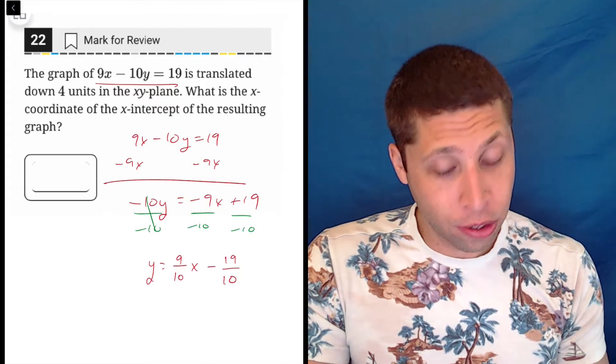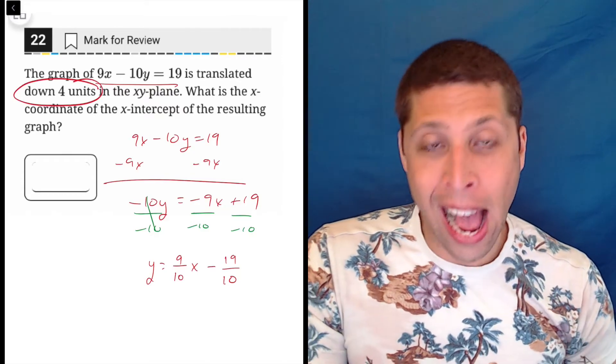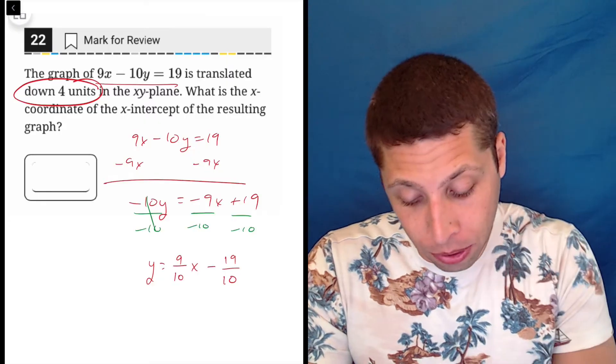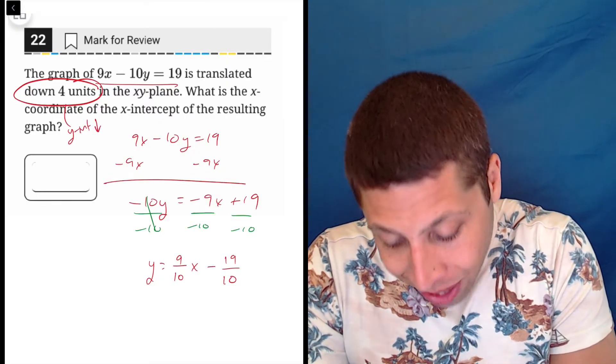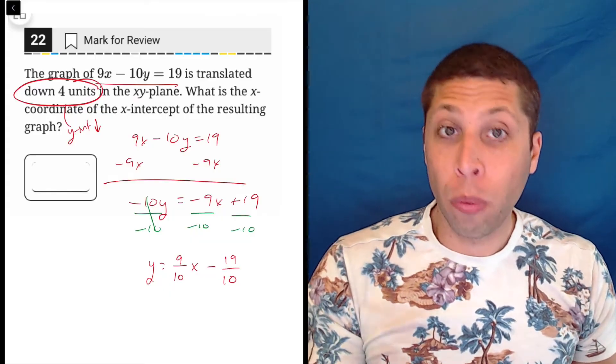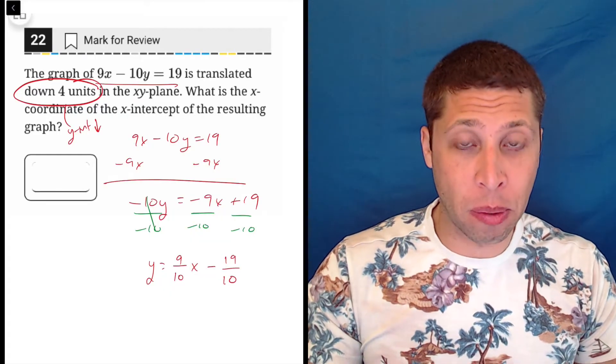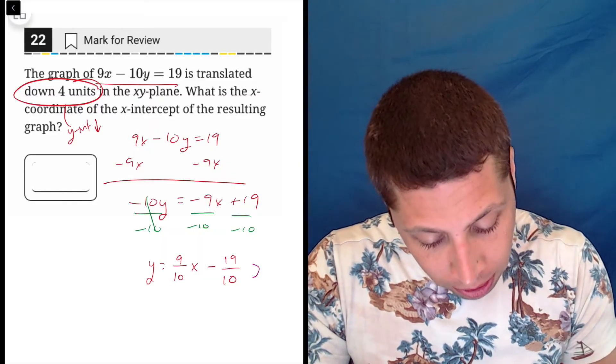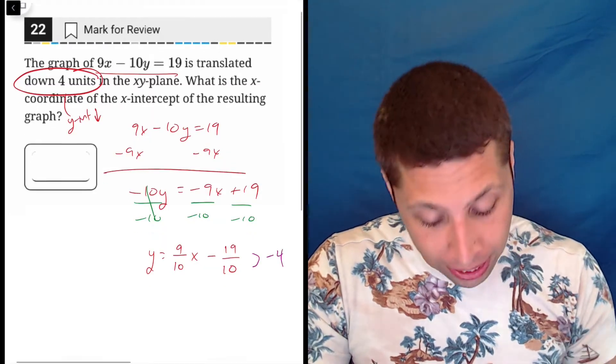Then I understand what this means to move it down four units. Now I understand my Y intercept, Y intercept is going to go down 4. So because now I'm in Y equals MX plus B format, it's easier for me to take this Y intercept here and subtract 4 from it to get a new equation.